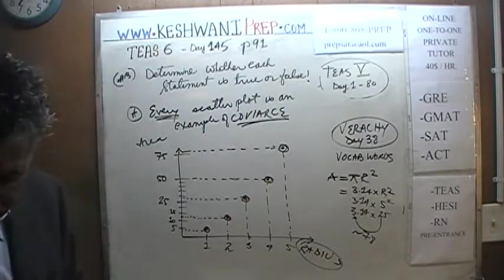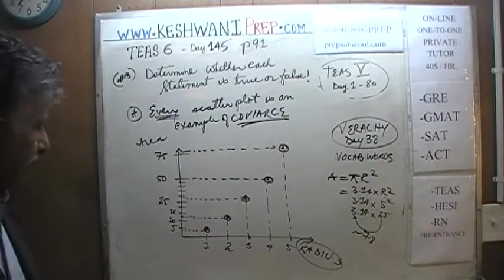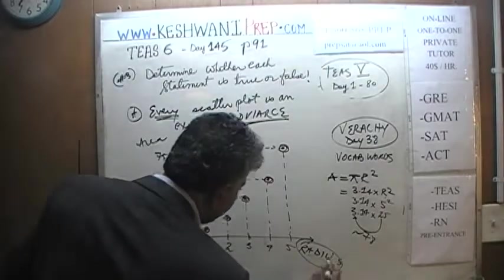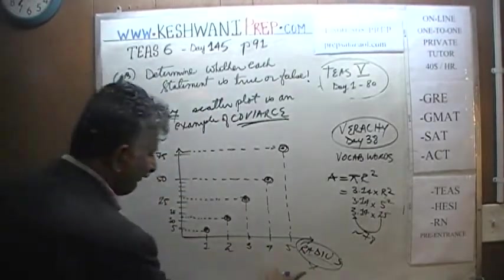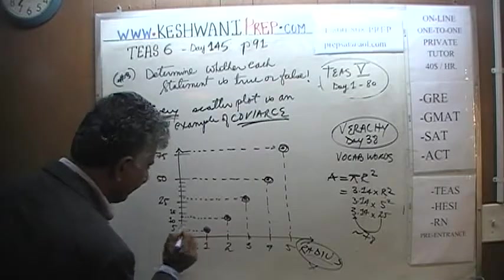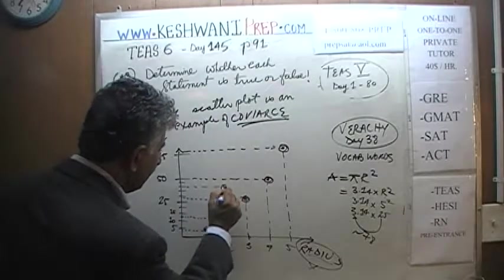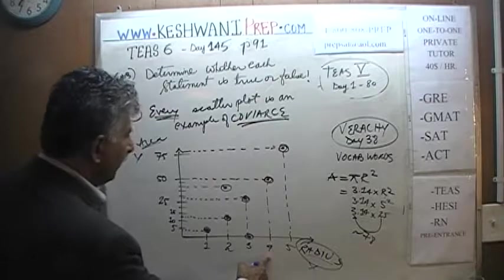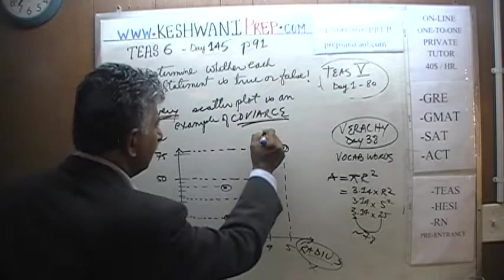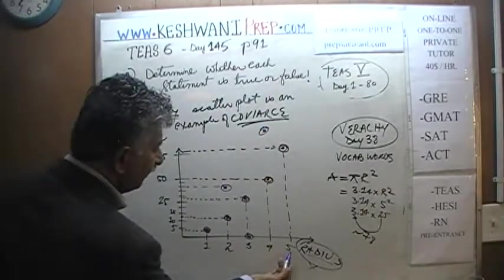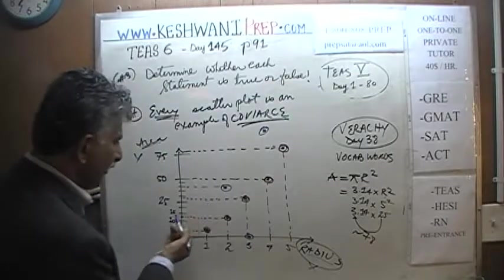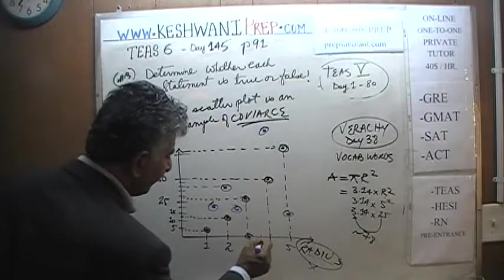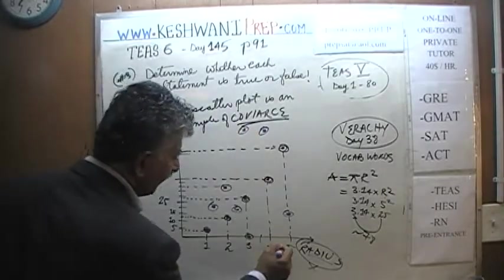Now with a different color — the blue marker — let's plot some other points. Instead of radius and area, I'll just speak in terms of x and y. When x is 1, y happens to be 3. When x is 2, y happens to be about 40. When x is 3, y happens to be 0. When x is 4, y is way up high. When x is 5, let's say it's 15. At x = 1.5, 2.5, 3.5, and 4.5, the y values are also scattered randomly.